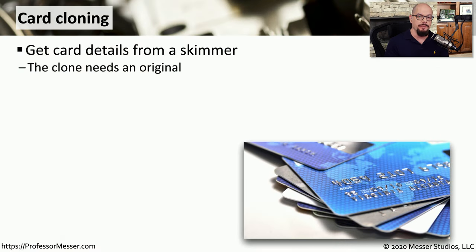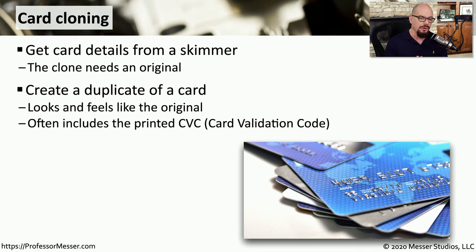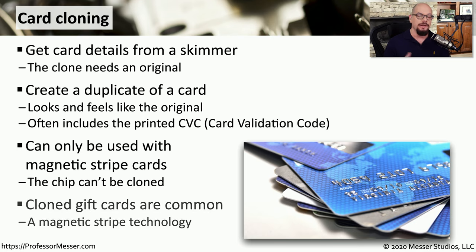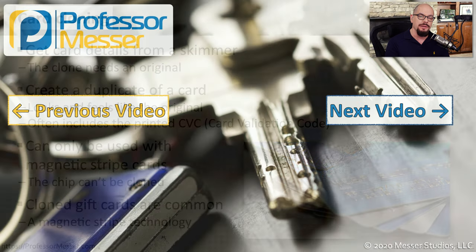Sometimes attackers use skimmed credit card information to perform online transactions, but sometimes they need a physical card. In that case, they clone the details of your card — creating an exact duplicate with all the same numbers, including the CVC or card validation code on the back. Attackers clone the magnetic stripe, so they can only use the card in transactions that accept a magnetic stripe; the chips inside cards cannot be duplicated. A very common target is gift cards: attackers clone a gift card, wait for it to be activated, then use it before the legitimate user can.